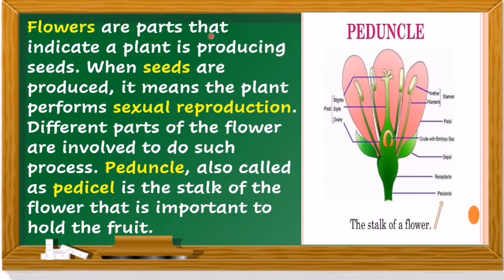Flowers are the part that indicate a plant is producing seeds. When seeds are produced, it means the plant performs sexual reproduction. Different parts of the flower are involved in this process. The pedicel, also called the stalk, is the stock of the flower that is important to hold the fruit.